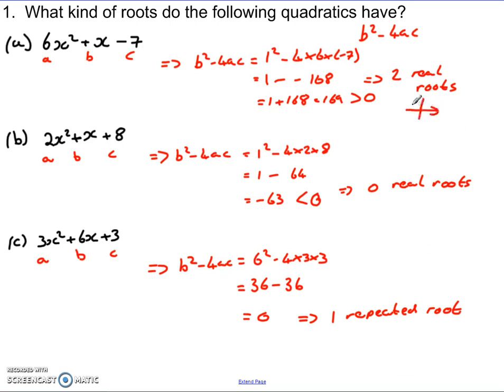What this means then for the graph is that it's going to touch the x-axis and no more. So the first one, 2 real roots, it's going to cut the x-axis twice. No real roots, it's not going to go anywhere near it, floating above or below. And one repeated root, it's going to come down and touch the x-axis and go away. We can calculate more exact values using the quadratic formula to find any solutions where the solutions exist.